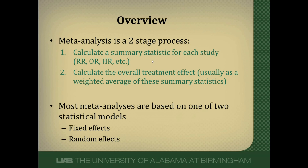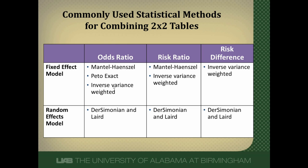The statistical techniques we use to calculate this overall treatment effect fall into usually one of two broad groups: a fixed effects model or a random effects model. There are several different types of statistical tests that fall under fixed effects models depending on the type of data, and in general, the most common random effects model is the DerSimonian and Laird model.